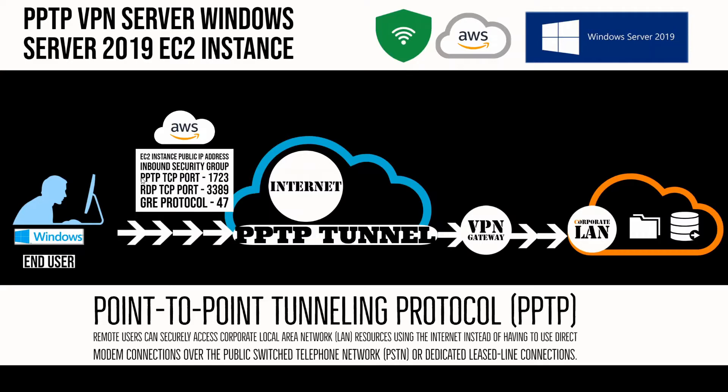The security group attached to this EC2 instance must have the Point-to-Point Tunnel Protocol TCP port 1723. We also need TCP port 3389, which is the Remote Desktop Protocol, to access the GUI of Windows Server. We also need Generic Routing Encapsulation protocol 47, which is required to establish the Point-to-Point Tunneling Protocol.